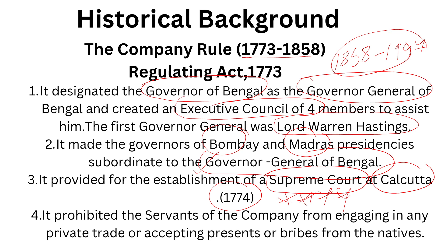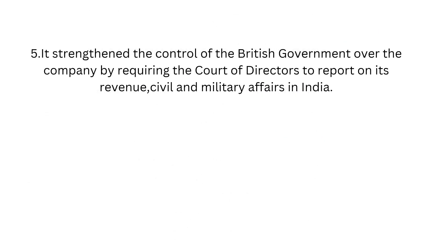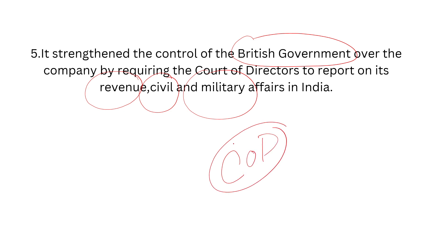The next important point and the last point with respect to the Regulating Act: there is a body called the Court of Directors, which is the East India Company body. From now onwards, the Court of Directors was required to report on the activities of the East India Company with respect to three important sectors: revenue, civil, and military. This imposed limitations on East India Company activities, meaning there would be strict control over their activities in revenue, civil, and military matters by the British Government.